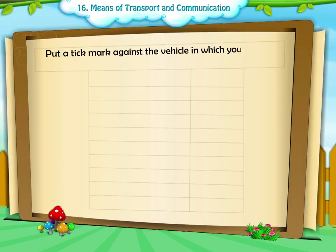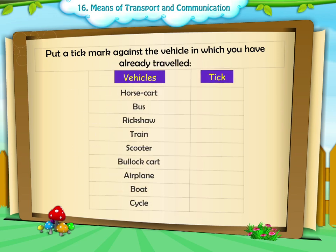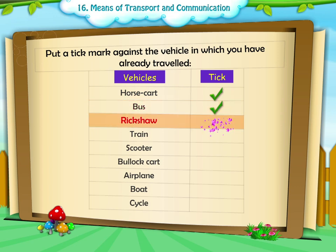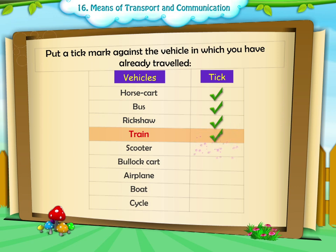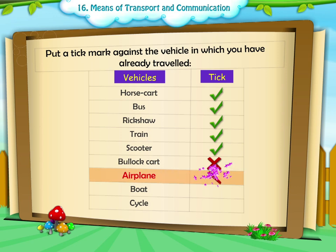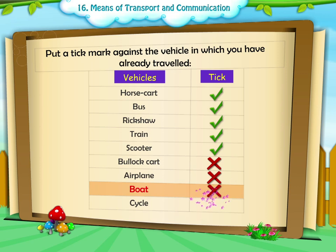Activity Three: Put a tick mark against the vehicle in which you have already travelled. Horse cart, bus, rickshaw, train, scooter, bullock cart, airplane, boat, cycle.